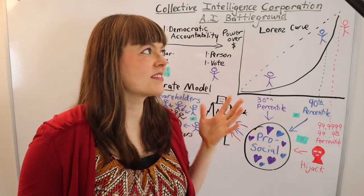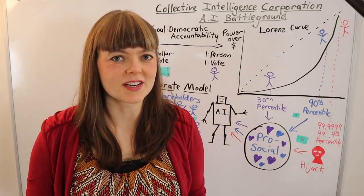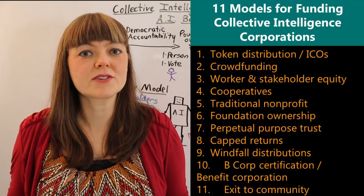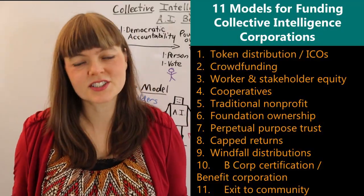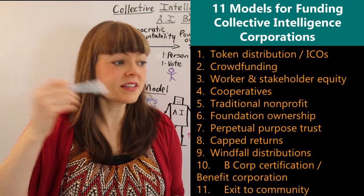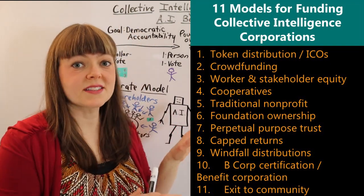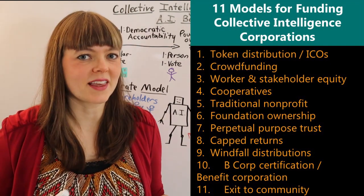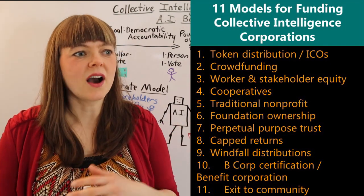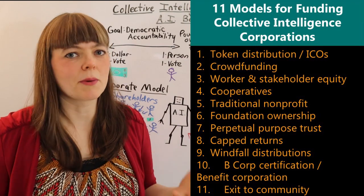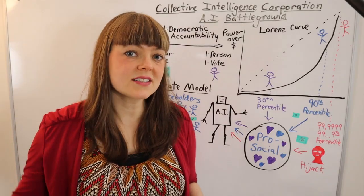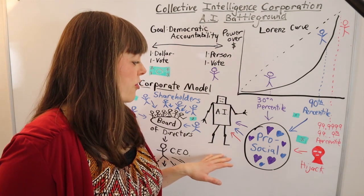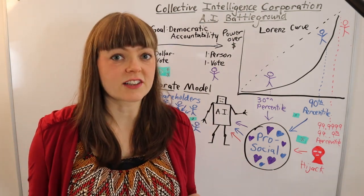I'm planning to do a series on the Collective Intelligence Corporation. This is going to evaluate these 11 different models from the Collective Intelligence Project. But this video is really me setting up the frame for that. Because when you first see that list, you might think this is kind of boring — what's the point, it's all about money. But in some ways, this is actually going to be one of the key battlegrounds over control over artificial intelligence.